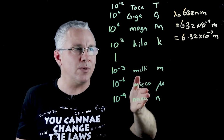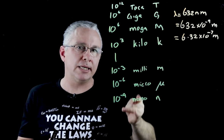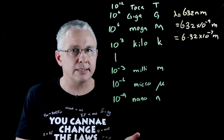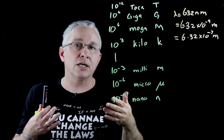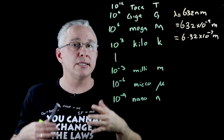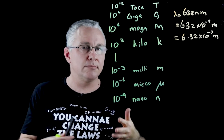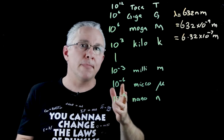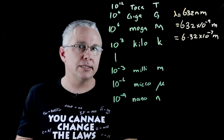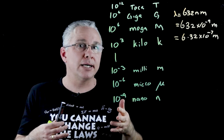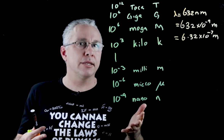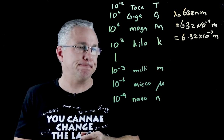So you replace the symbol with the value. Why? Because when we write them with the prefix, the numbers make better sense. Ten kilometers is easier to conceptualize than 10,000 meters. One micrometer is easier to conceptualize than 1 times 10 to the negative 6 meters, or one millionth of a meter.